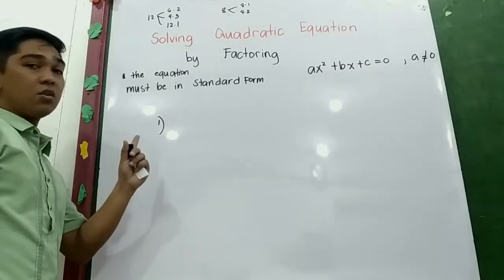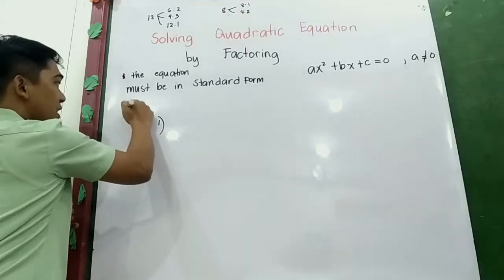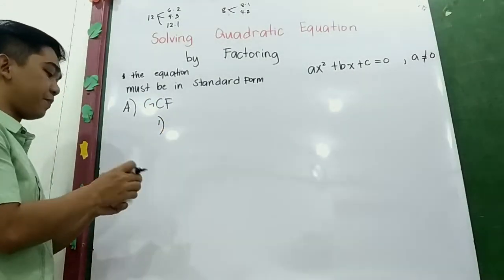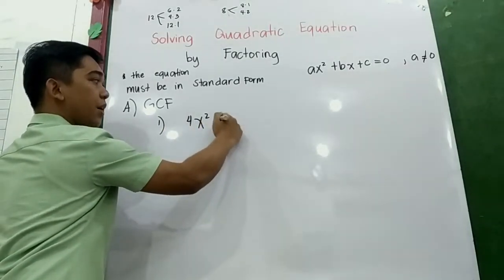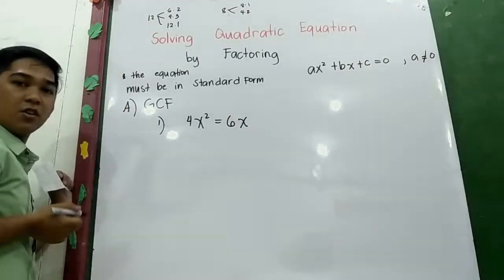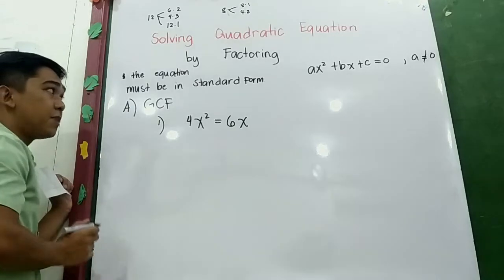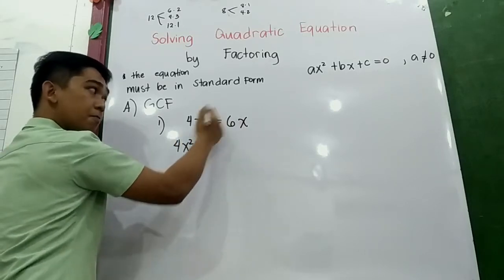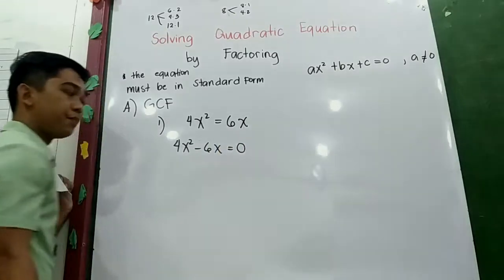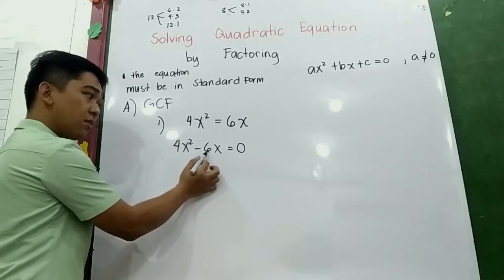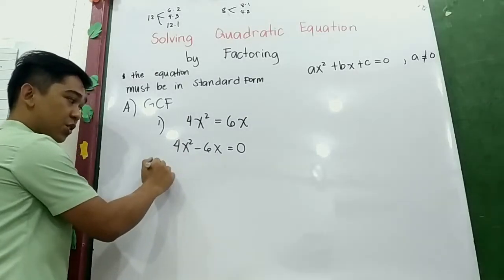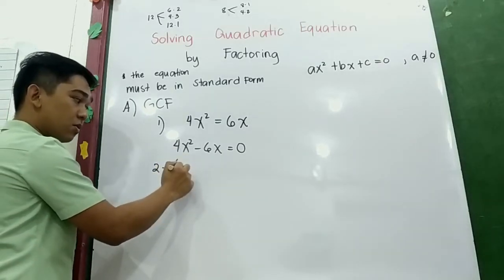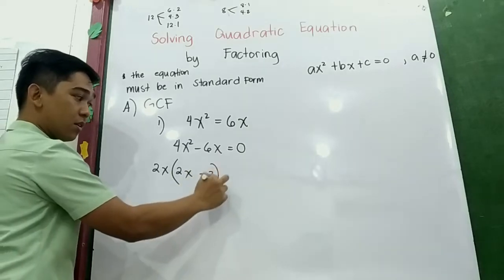In factoring we have three techniques. The first is GCF — Greatest Common Factor. Let's try number one: 4x² = 6x. First step, the equation must be in standard form, so we transpose 6x. We get 4x² − 6x = 0. Now we get the common factor of 4x² and −6x. The common factor is 2x.